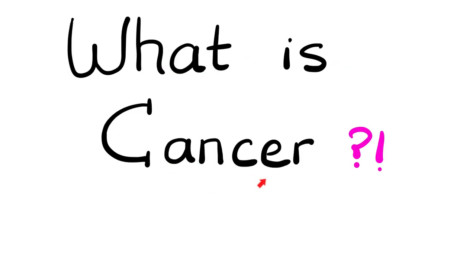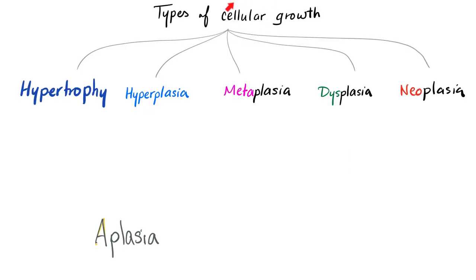What is cancer? Cancer is a malignant neoplasia — it's a malignant tumor. But is hematoma a tumor? No. Hematoma is a tumor-like growth. Types of cellular growth include hypertrophy, hyperplasia, metaplasia, dysplasia, and neoplasia. We have talked about these before.